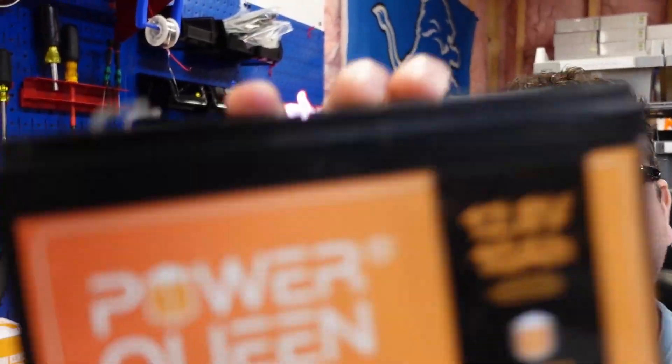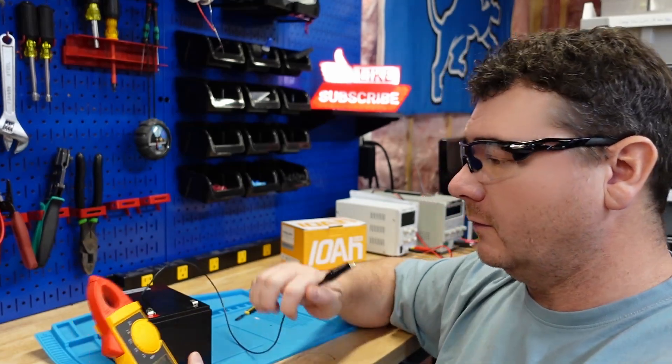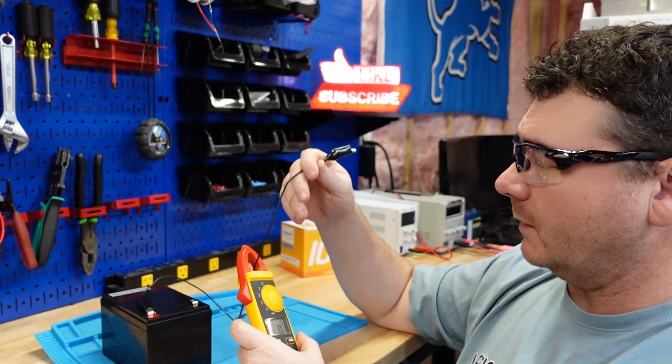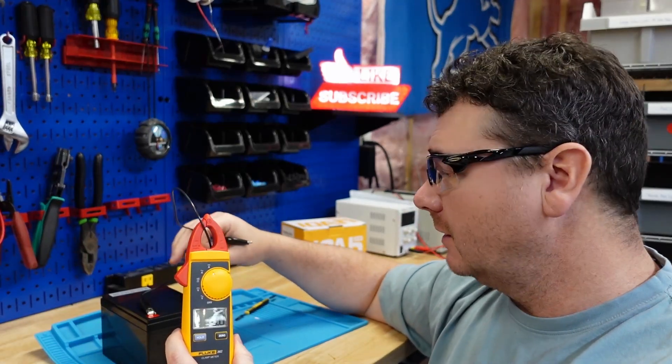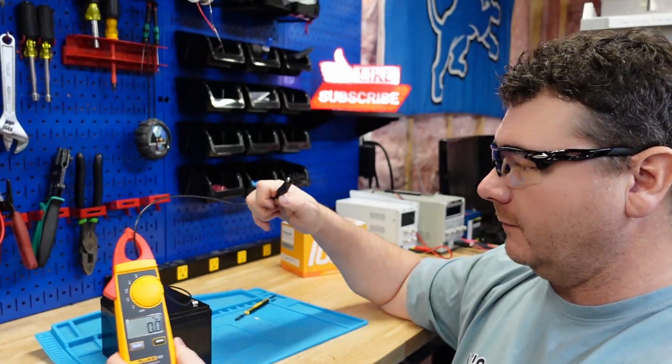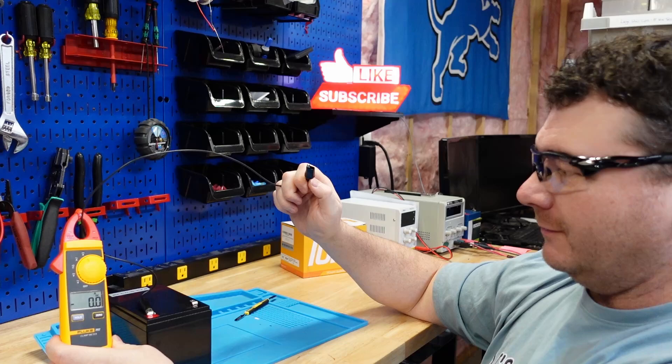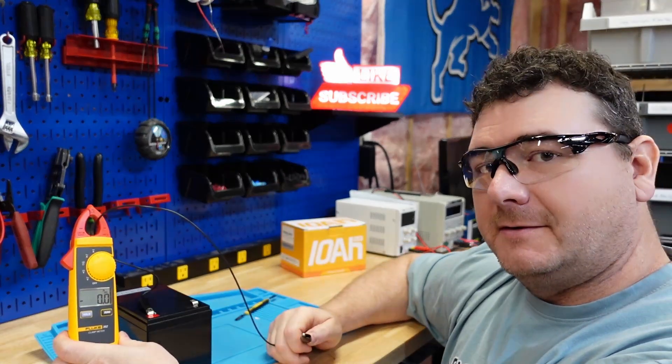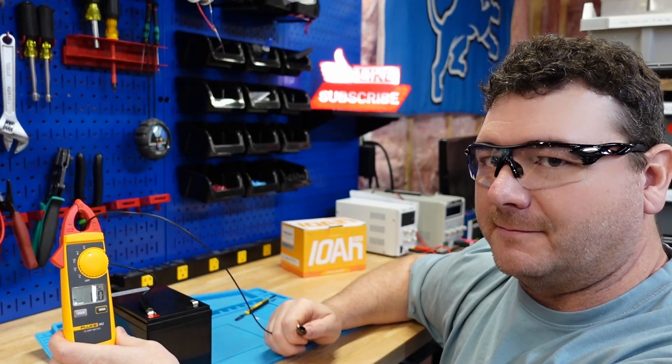There we go. I almost forgot to do the short circuit protection test. So what we are looking for is this BMS, the battery management system of this battery. We're looking for that to knock this battery off when it detects a short. Maybe it's just slow to react, we're gonna try that again.